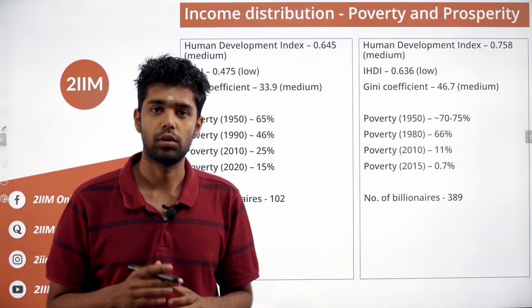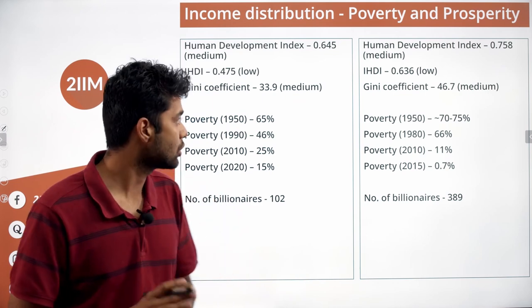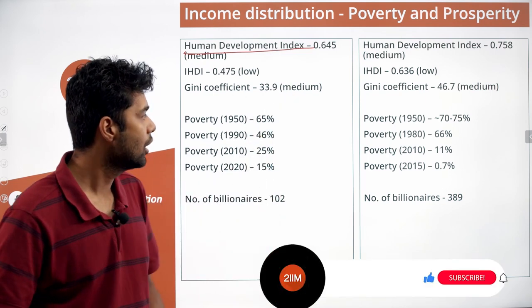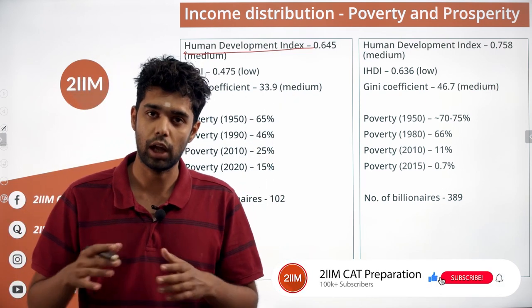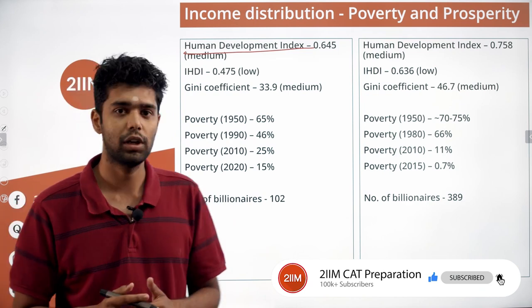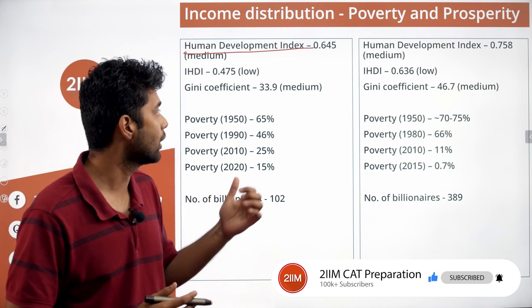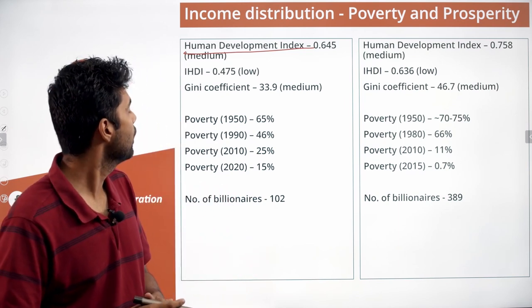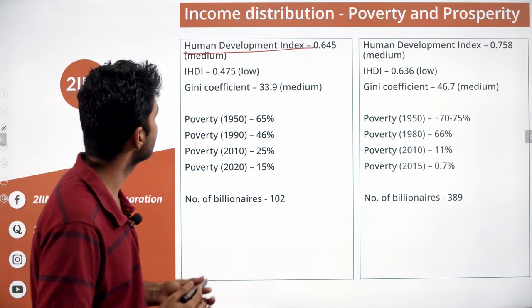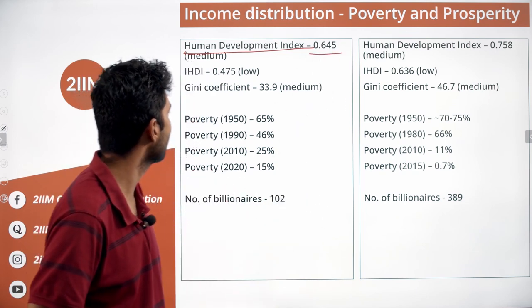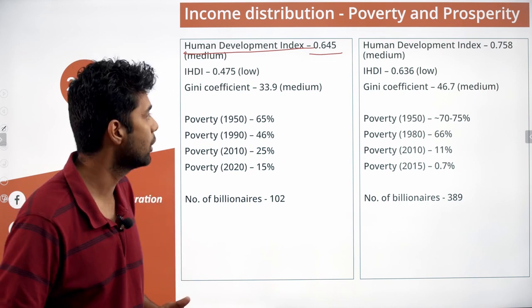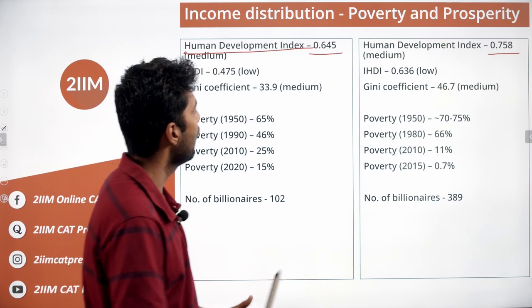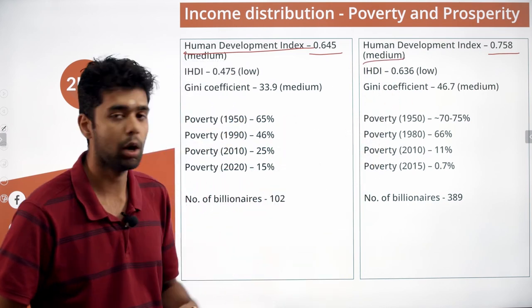Now let's look at how the population of these two countries fares on key indices. The first is the Human Development Index (HDI), developed partly with input from Indian economist Amartya Sen. India's HDI is 0.645, categorized as medium human development. China's HDI is 0.758 — significantly higher and classified as upper medium.